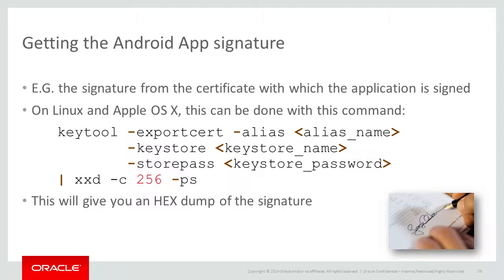Unfortunately, the xxd command is available on OS X and Linux. There is no easy way to perform the dump on a workstation running Microsoft Windows. One possible solution is to download a version of xxd compiled for that platform.